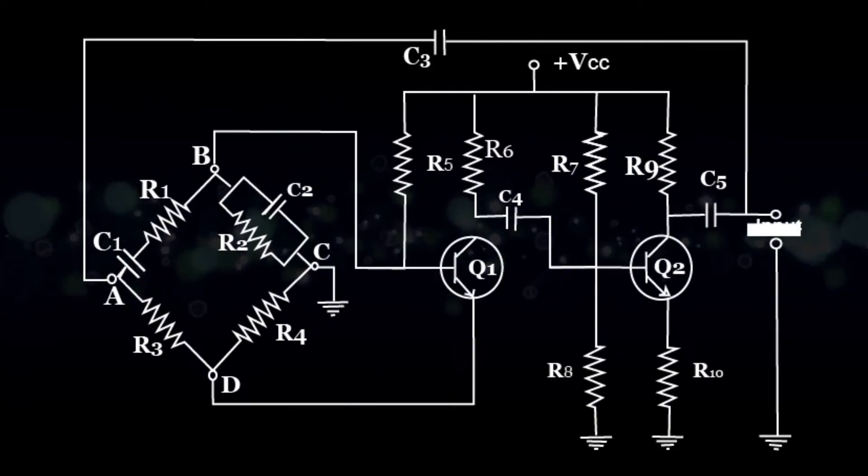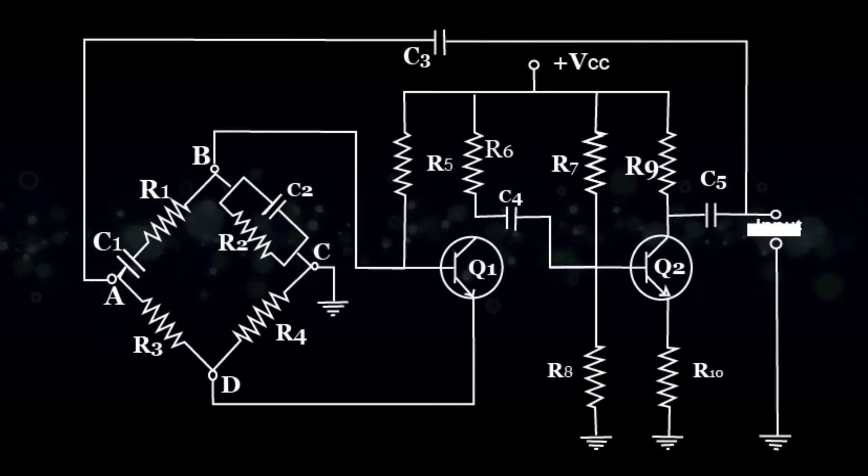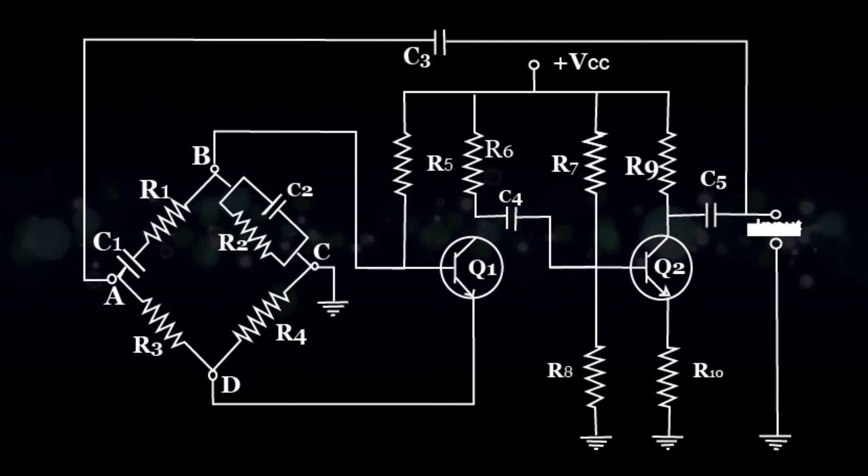The diagram shows R1 in series with C1, R3, R4, and R2 parallel with C2 to form the four arms.